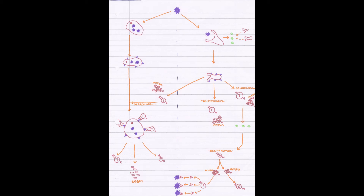This B-cell will then split into two different types of cells and replicate by mitosis — clonal expansion. The two types are B-memory cells, which have the complementary antibody and float around in the blood waiting to be activated next time this pathogen comes along, and plasma cells. Plasma cells replicate to give loads of B-cells that pump out millions and millions of antibodies into the blood. Those antibodies then neutralize and agglutinate the pathogen, disabling it and destroying it so it can't do any more harm.